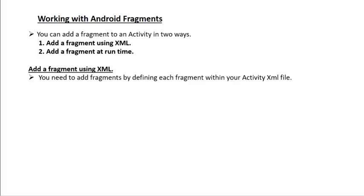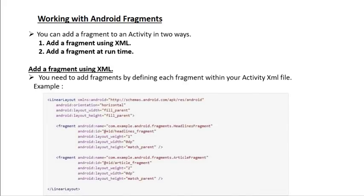You add a fragment by defining each fragment within your activity XML file. Here is a simple example showing a layout that contains two fragments. To add a fragment using XML, you specify a fragment element in your layout file. The android:name attribute indicates the class corresponding to that fragment. The first class name is HeadlineFragment, corresponding to the first fragment, and you also specify an id and other parameters like width and height. This is how we add a fragment directly to the XML file.